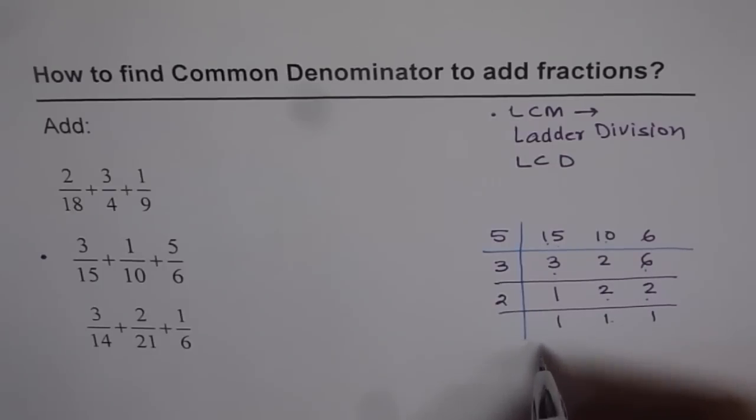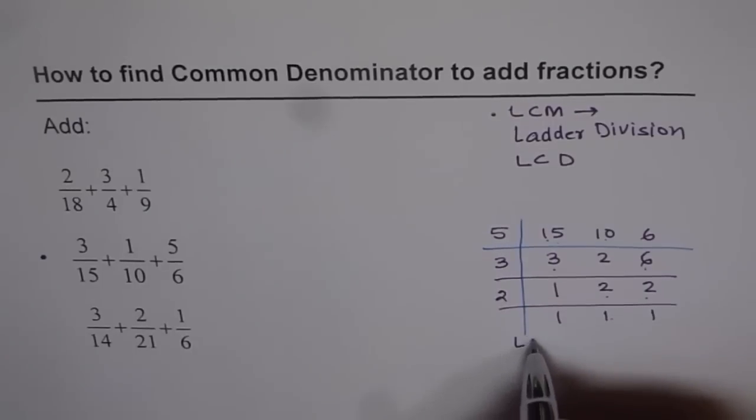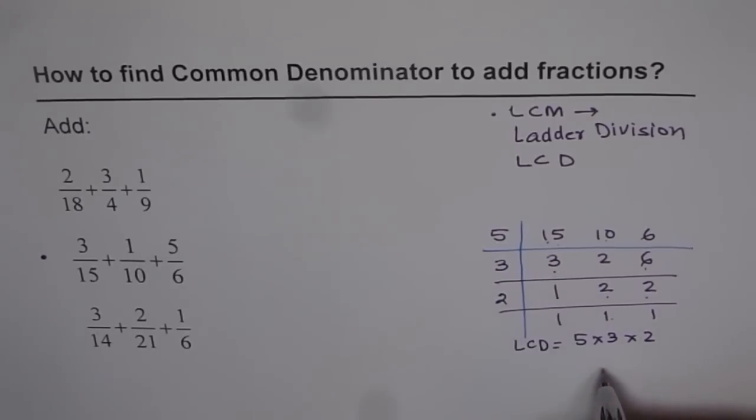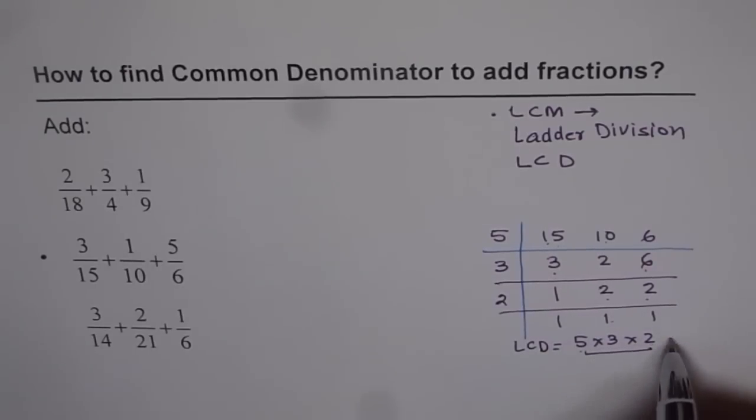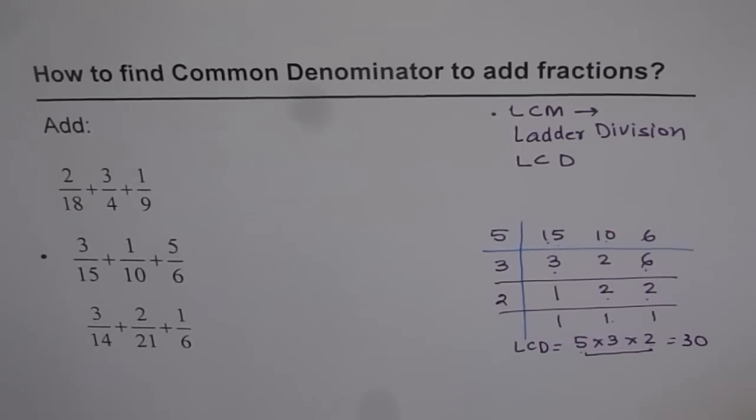So what is your least common denominator? It is product of these factors. The least common denominator for us is equal to 5 times 3 times 2. To multiply, always look for such combinations. 5 times 2 is 10. 10 times 3 is 30. So we get our least common denominator as 30. Good job.